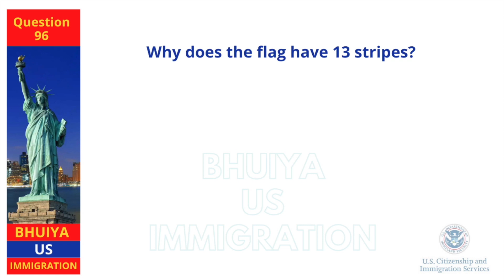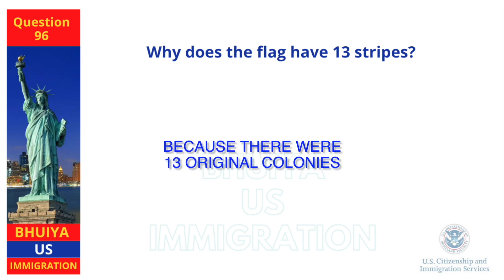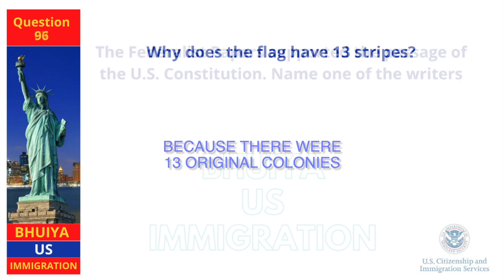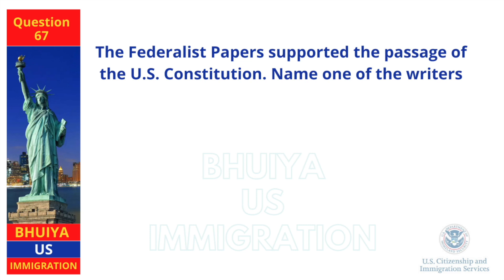Why does the flag have 13 stripes? Because there were 13 original colonies. The Federalist Papers supported the passage of the U.S. Constitution. Name one of the writers. James Madison.